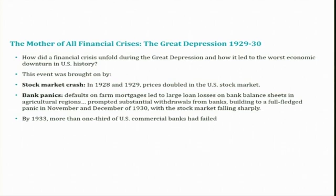We will be looking at this from an economic angle — what caused this financial crisis — and we will apply this sequence of events in our framework. The first one is the Great Depression of 1929-30, which lasted for one decade. This is considered the mother of all financial crises. Our question here is how did a financial crisis unfold during the Great Depression and how it led to the worst economic downturn in US history.